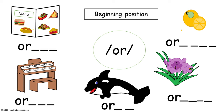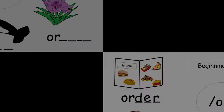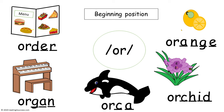Now have kids fill in the template with remaining letters to make each word. This is the completed example with O-R in the beginning position: orange, orchid, orca, organ, and order.